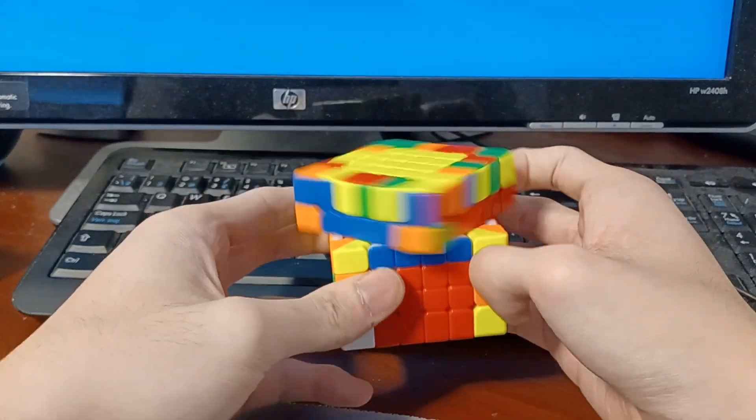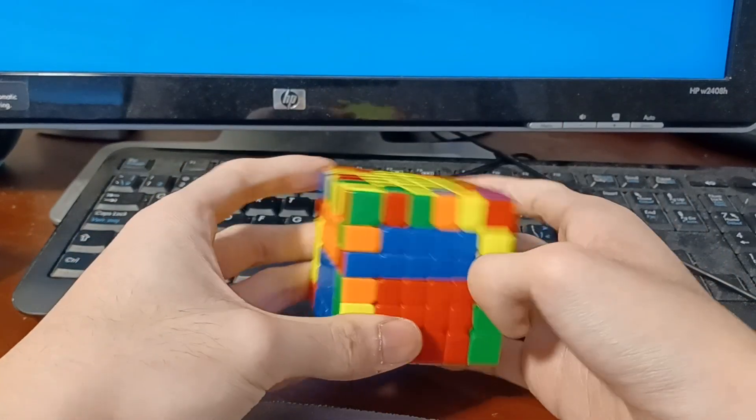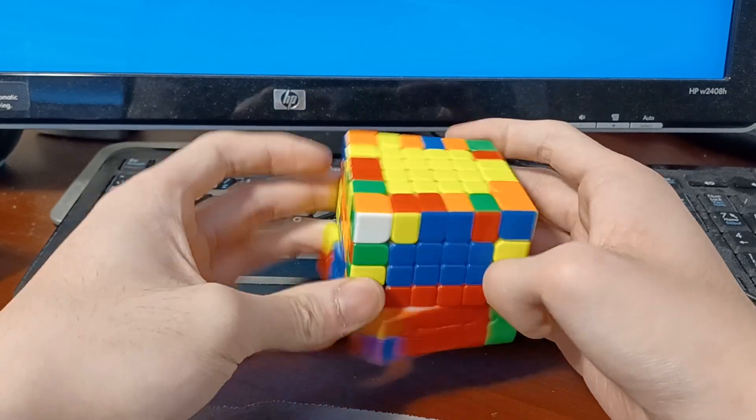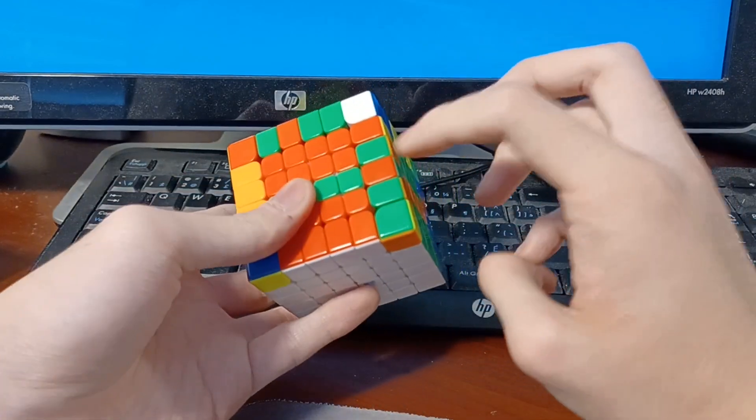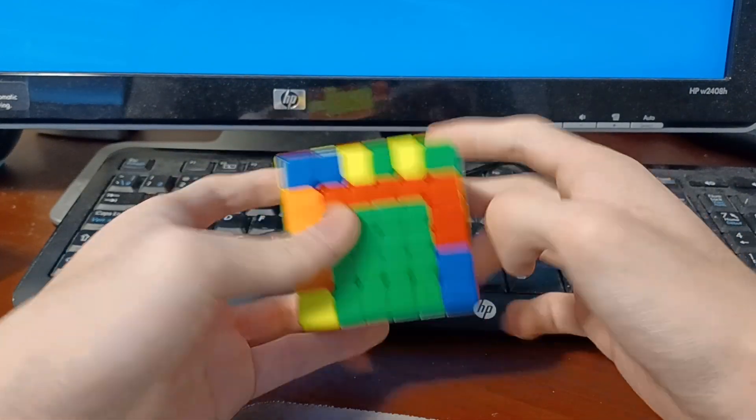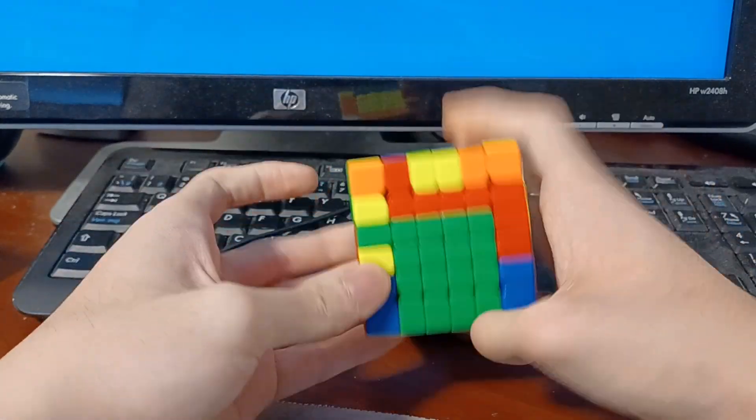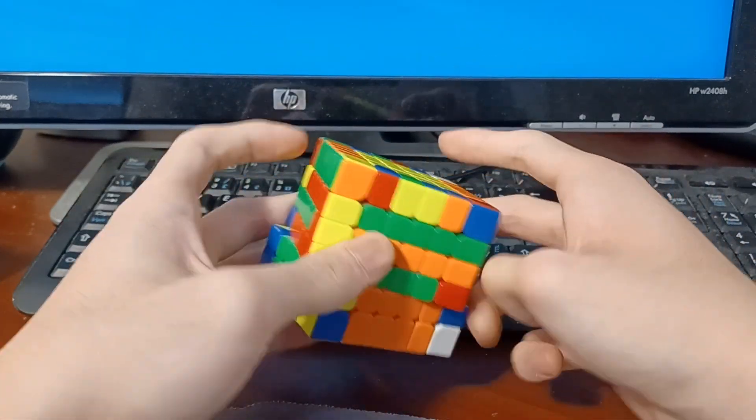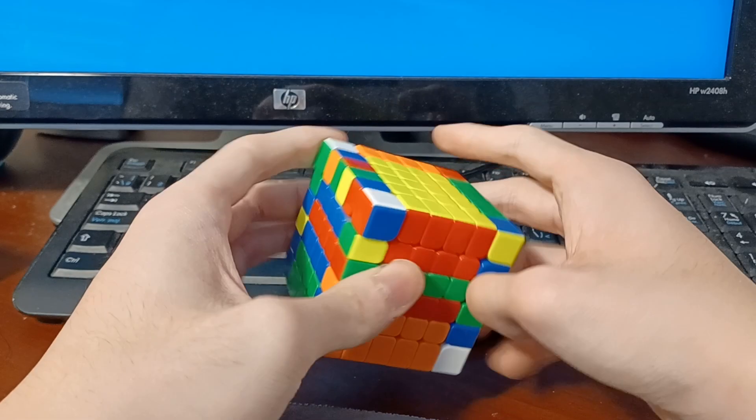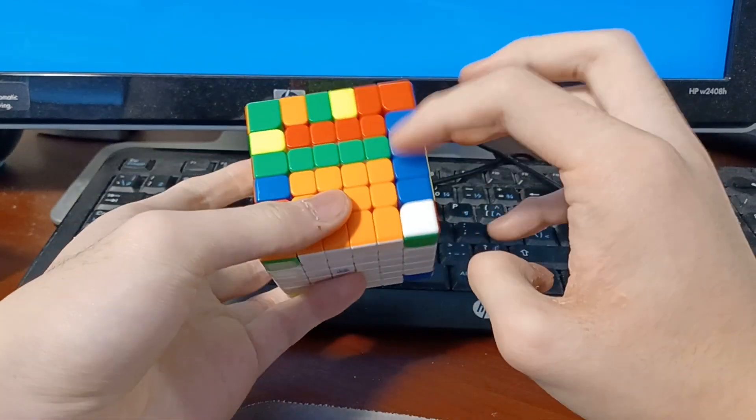Okay, free slice edges. These three. These four. These three. And that. And finally, blue and yellow.